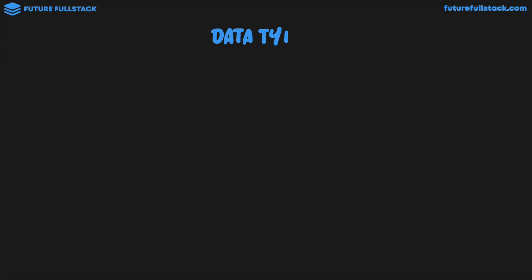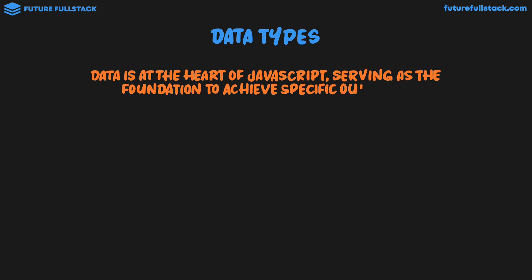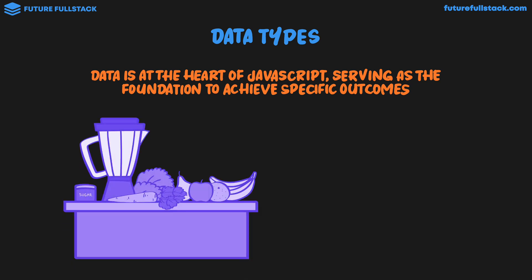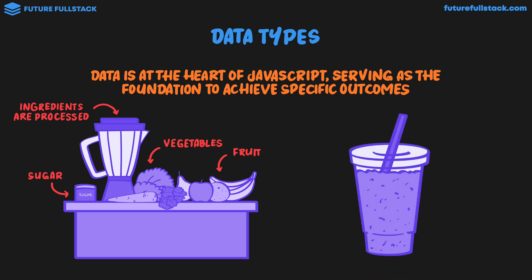Let's start off by talking about data types. Data is at the heart of JavaScript, serving as the foundation to achieve specific outcomes. Looking at the juice bar analogy, to make a juice we need different kinds of ingredients like fruit, vegetables, and sugar. These ingredients are processed in a blender, and the final result is our juice — a blend of fruit, vegetables, and sugar. This is exactly the same in JavaScript, where we process different kinds of data to produce a specific outcome on a web page.